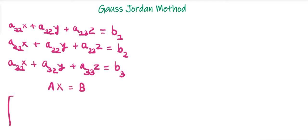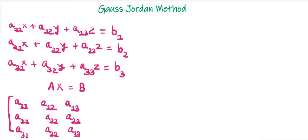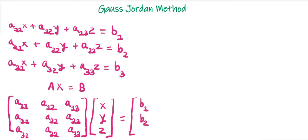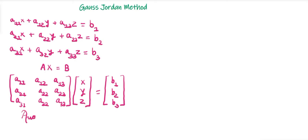For matrix A, the first row will be the coefficients of equation 1: a11, a12, a13. The second row will be the coefficients of equation 2: a21, a22, a23. And the third row will be the coefficients of equation 3: a31, a32, a33. Multiplied by x (the column vector x, y, z) equals b (the column vector b1, b2, b3). Then our next step will be to write the augmented form of the matrix, which is [A | b].